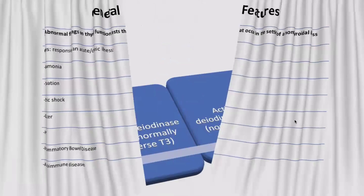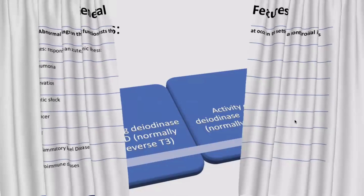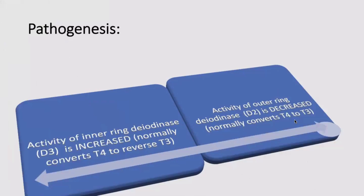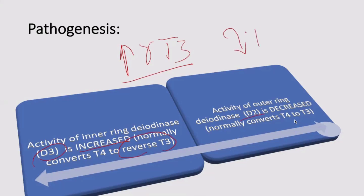The cytokines act on the deiodination enzymes: they act on D3 and cause increased activity of D3, so generation of reverse T3 (rT3) is increased. Conversely, cytokines inhibit the activity of D2, leading to decreased T3 — the most metabolically active hormone acting on peripheral tissues.